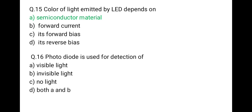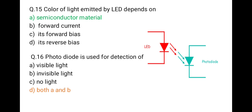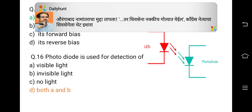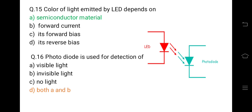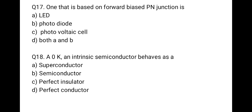The next question is: a photodiode is used for the detection of — and the correct option is both A and B. A photodiode is a special diode that converts light energy into electric energy, so both A and B are correct. The following question: which device is based on forward bias PN junction? The correct option is LED, because only the light emitting diode works in forward bias. Other devices like photodiodes and photovoltaic cells work in reverse bias.